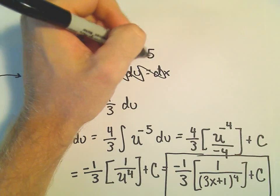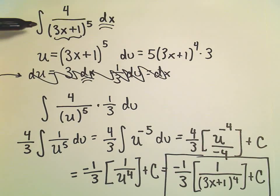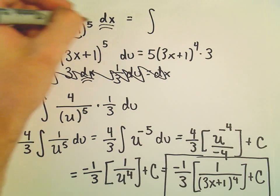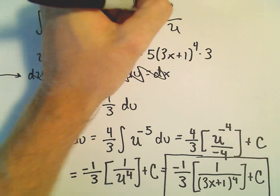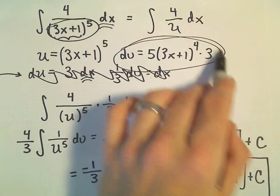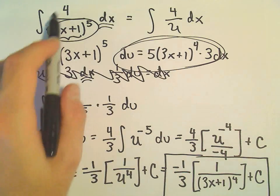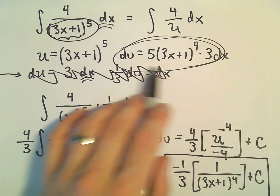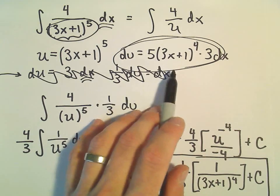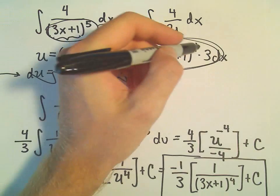So you'd get 5 times (3x+1) to the 4th times 3. And notice, if you try to use something like this, the stuff on the bottom, that's what you would be calling u. And then you just have 4 dx left over. And kind of the issue is, all of this stuff, I should have put my dx on here, all of this stuff isn't really present in the problem. So that's kind of the issue. If we pick u to be all of this, we kind of get too much when we do the differential. And it doesn't mean that a u substitution doesn't work. It just means you picked the wrong u substitution.